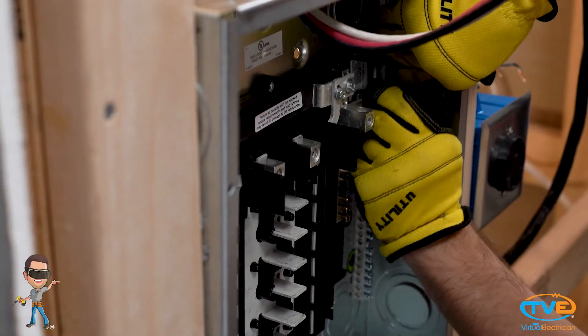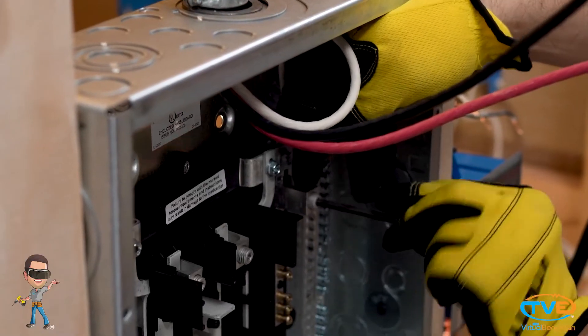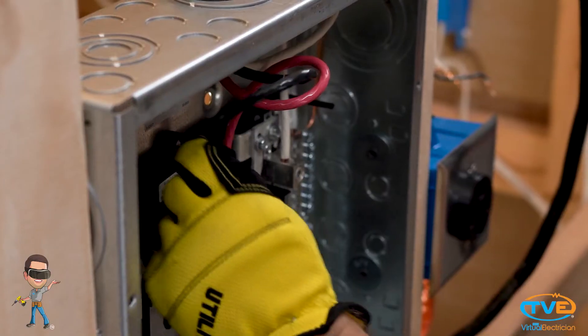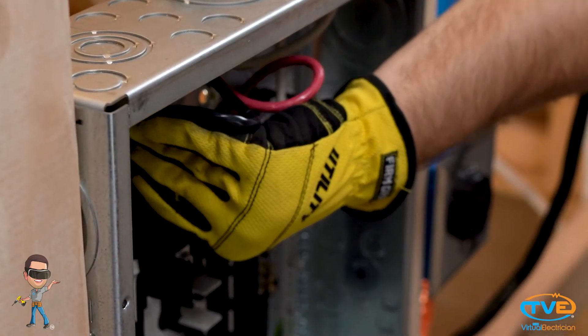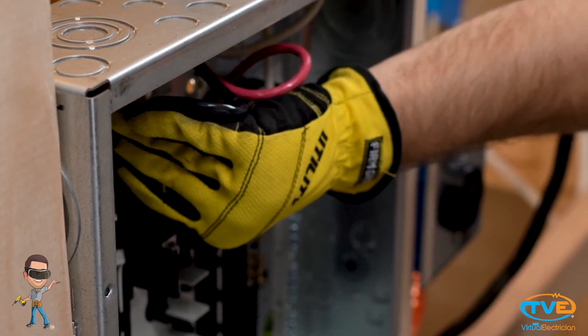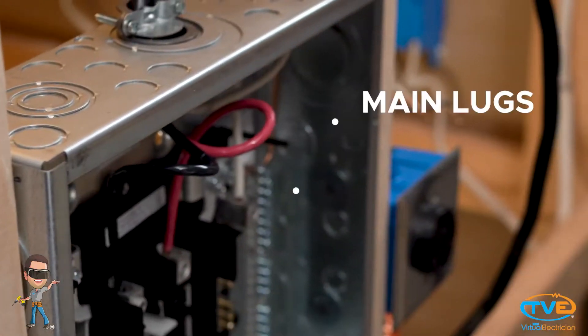Install the bushing over the main service clamp. Install the ground wire on the ground bar, the neutral wire on the neutral bar, and since this is a sub-panel right next to the main panel, you do not have to have a main breaker panel box. You have a main lug panel box. So install the black and red wires on the main lugs.